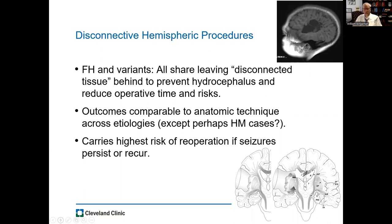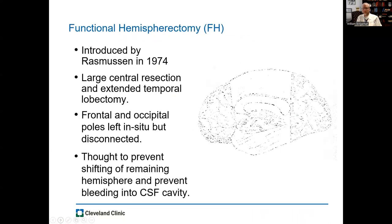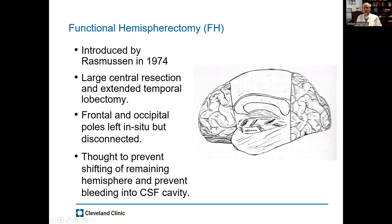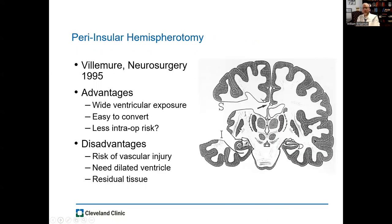The difference is in the risk of hydrocephalus or the risk of re-operation. The classic functional hemispherectomy introduced by Rasmussen in 1974 involved a large central resection and an extended temporal lobectomy, leaving the frontal and occipital poles in place to prevent shifting. Peri-insular hemispherotomy was introduced in 1995 in Neurosurgery by Villamur, with advantages of wide ventricular exposure — much of the disconnection is done through the ventricular system — and perhaps less intraoperative risk.